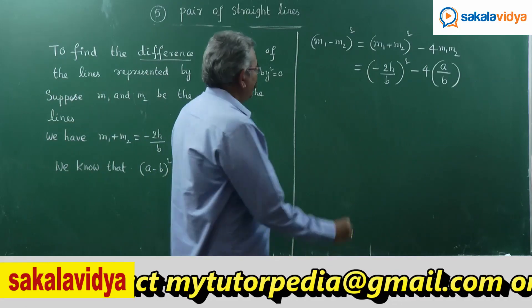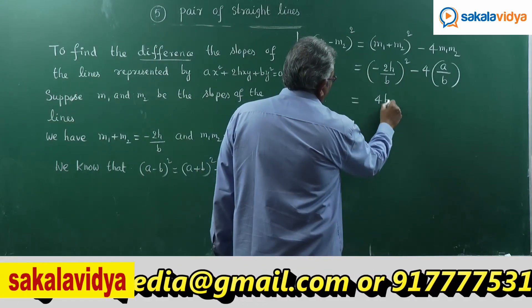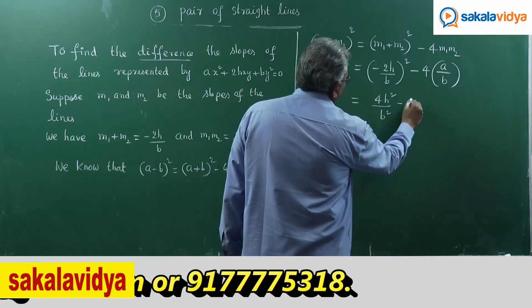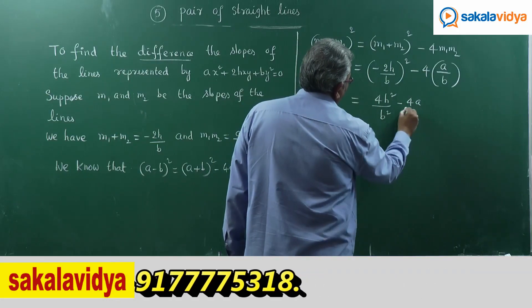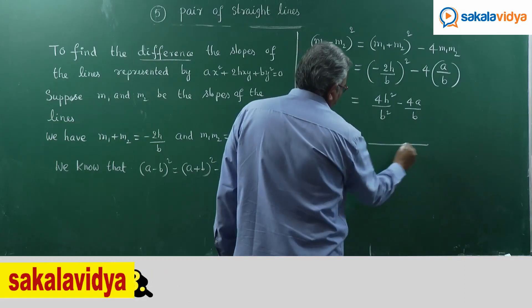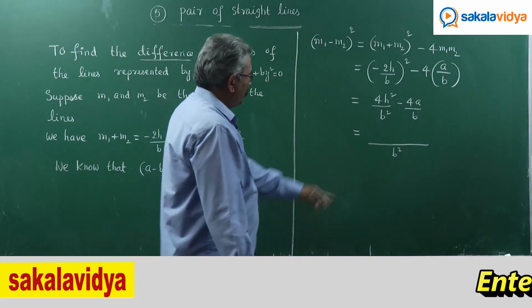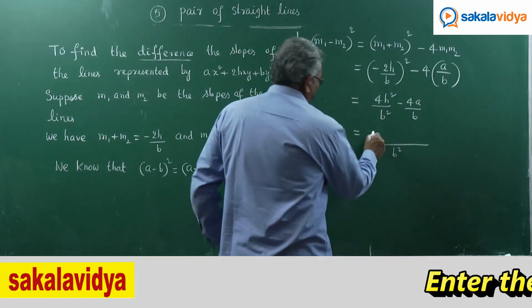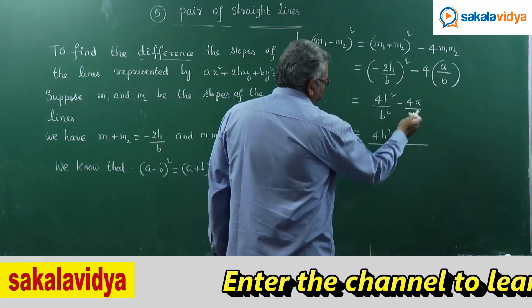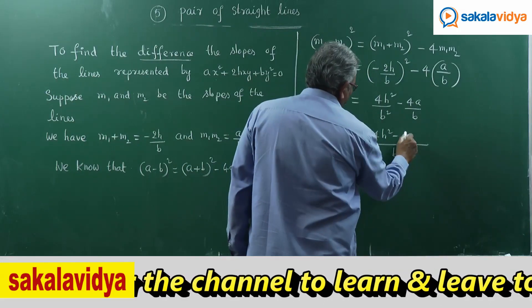This gives us 4h²/B² - 4A/B. Taking LCM as B², we get (4h² - 4AB)/B². Taking 4 common, we have 4(h² - AB)/B².